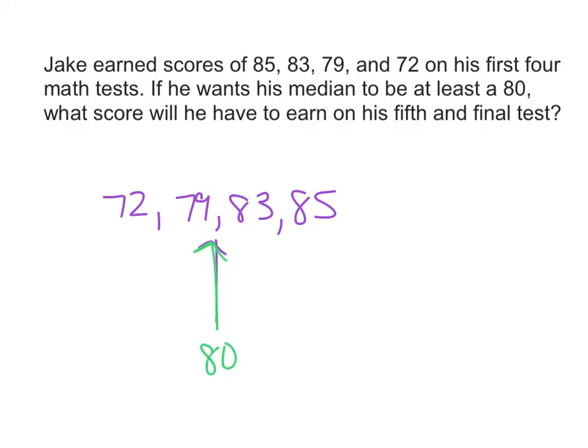80 would go in there. And so if he wants his median to be 80, then 80 does fall in the middle here. So that means he would actually have to earn an 80. Because that would go right here, it would be in the middle, and that would make that the median. So this student needs to earn an 80 on his final test.